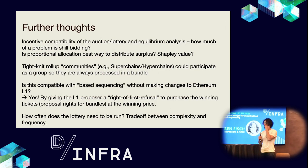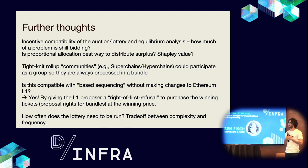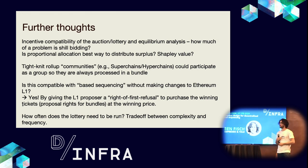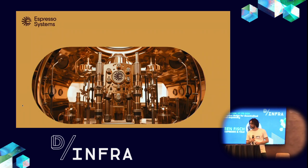Some final thoughts: there's more work to be done on analyzing the incentive compatibility of this auction or lottery, the equilibrium analysis, and how much of a problem shill bidding really is. Also, is proportional allocation the best way to distribute the surplus, or could we use a Shapley value distribution — and what would be the impact on equilibrium analysis? Tight-knit rollup communities like super chains or hyper chains could also participate as a group, always processed in a bundle. This is compatible with base sequencing without changes to the Ethereum L1, because we can simply give the L1 proposer the right to purchase the winning tickets at the winning price. Finally, how often does the lottery need to be run? There's a trade-off between complexity and frequency.